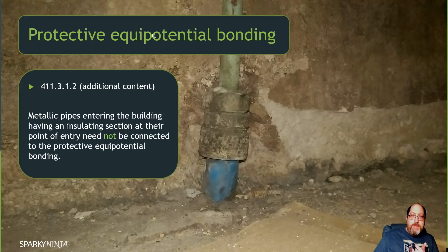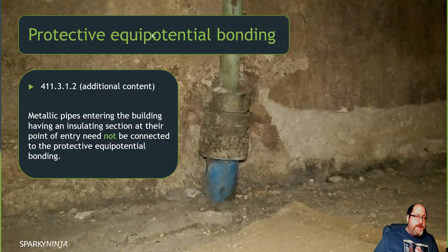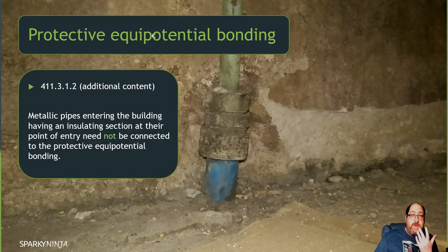Added content to regulation 411.1.3.1.2 regarding the installation of protective bonding. It adds wording that metallic pipes entering the building having an isolated section at their point of entry need not be connected to the protective equipotential bonding. This isn't new — it's been in the on-site guide for a while, but it's now been introduced into the 18th edition. It's surprising how many people still get confused with bonding, supplementary bonding, and equipotential bonding.